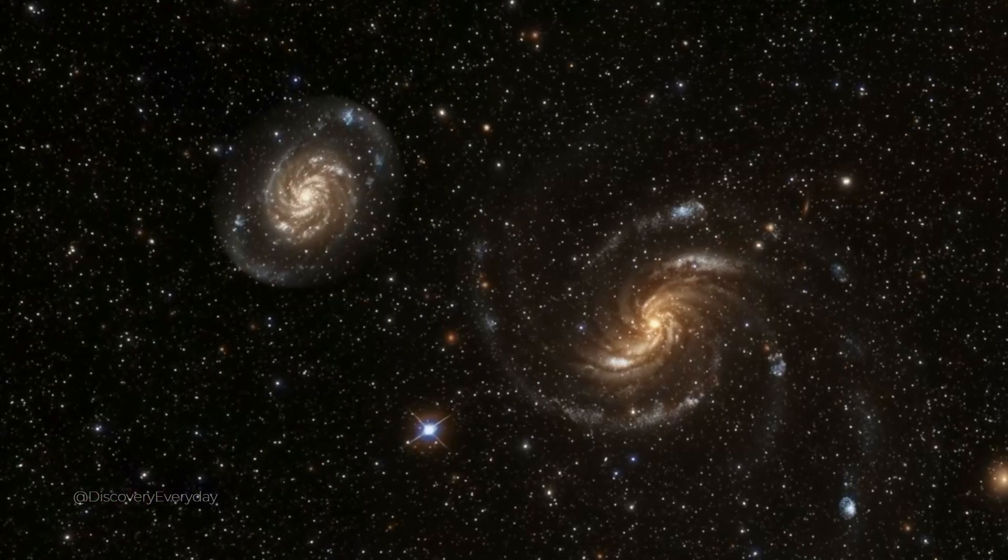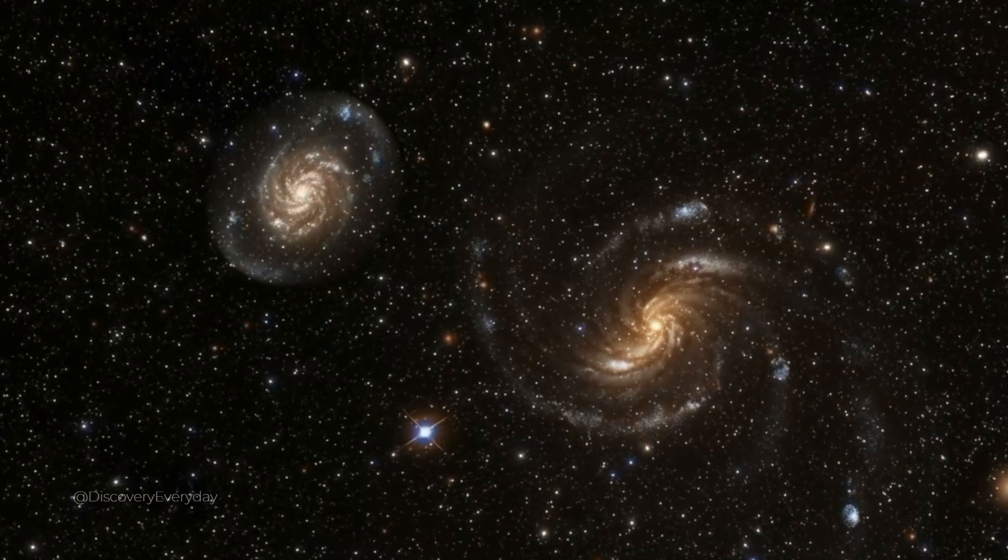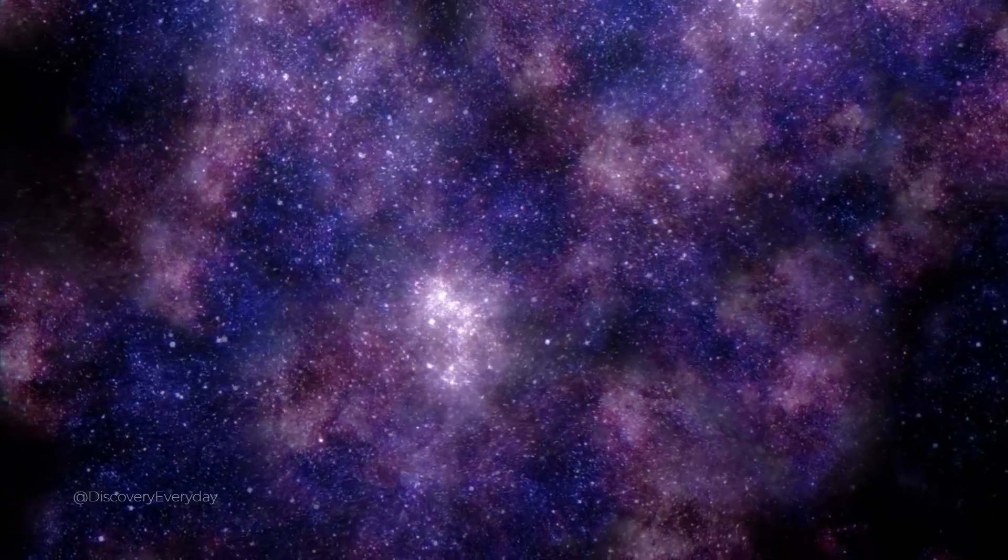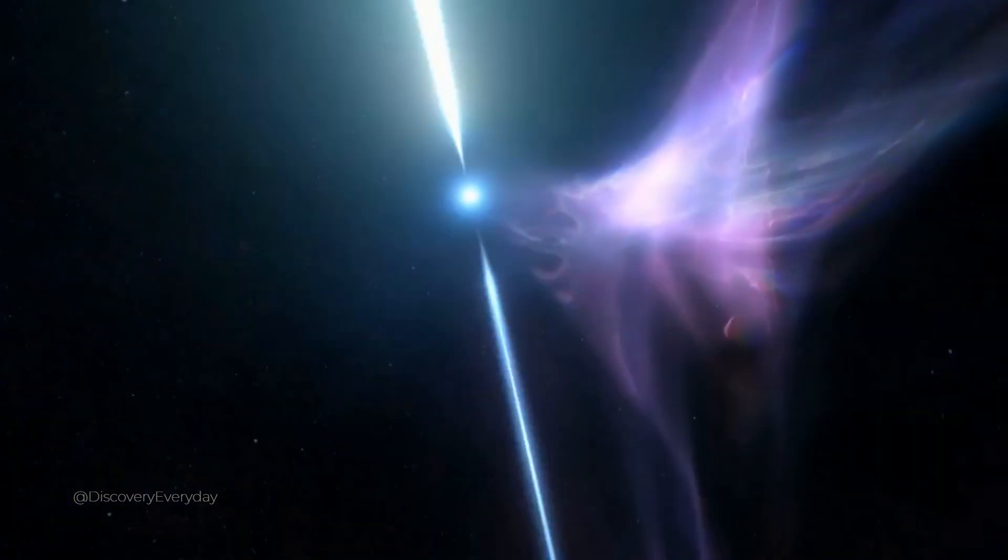How do galaxies form? The simple answer is through gravity. Primordial matter in the newborn universe wasn't spread out evenly. Areas of slightly greater density attracted more matter and grew bigger over time, empty spaces grew emptier.